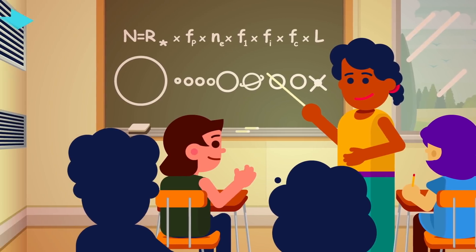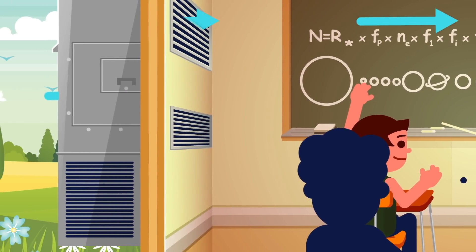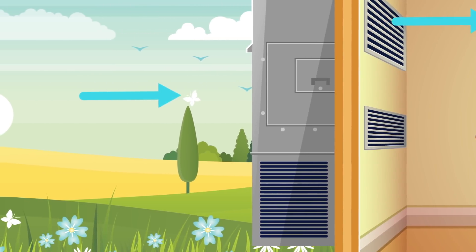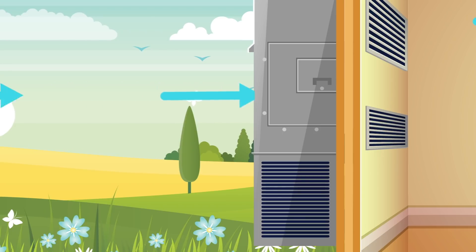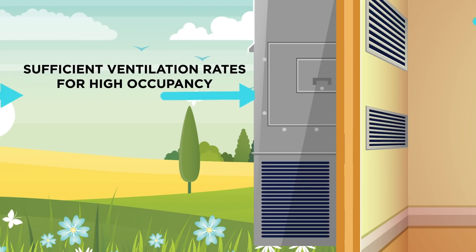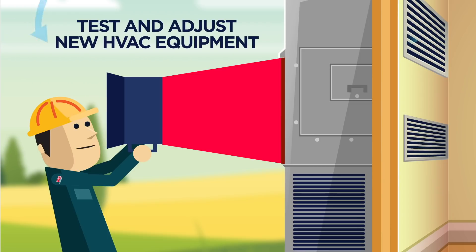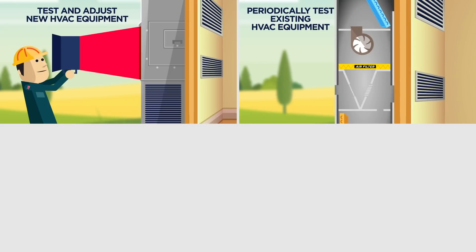We recommend that school districts take the following actions to improve classroom ventilation and indoor air quality. When purchasing new HVAC equipment, select equipment capable of providing sufficient ventilation rates for high occupancy areas like classrooms. When installing new HVAC equipment, test and adjust the system to provide the required ventilation rate. Periodically test existing HVAC equipment to ensure the required ventilation is provided. With minor adjustments, many existing systems will be able to meet ventilation requirements.